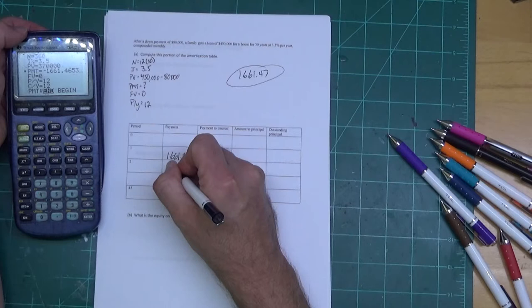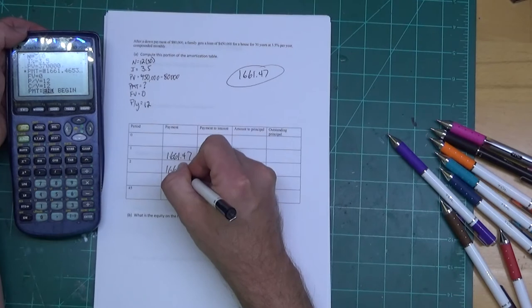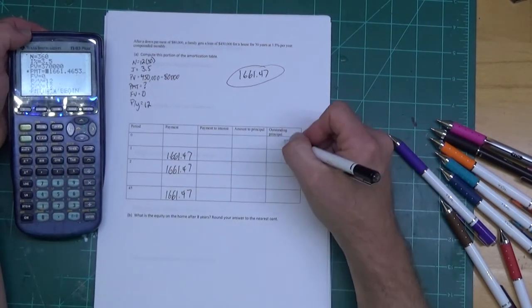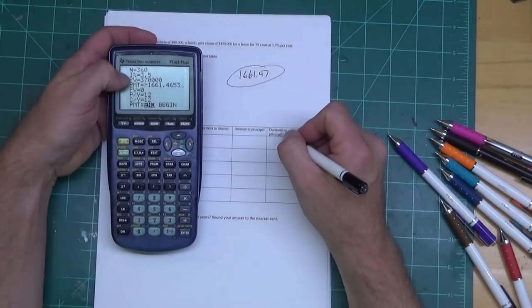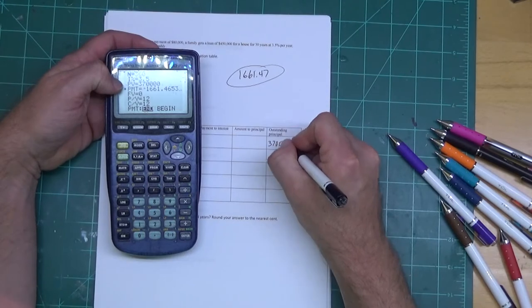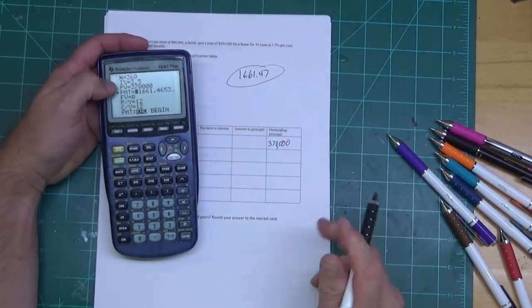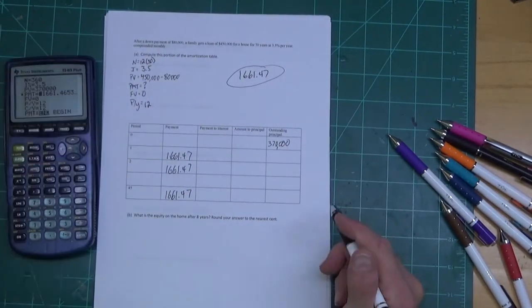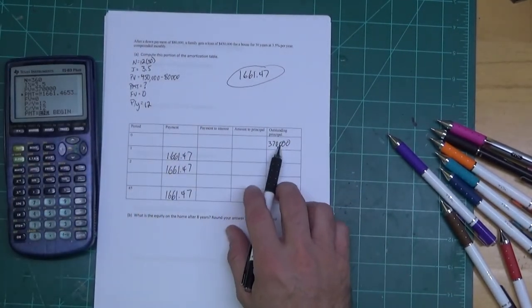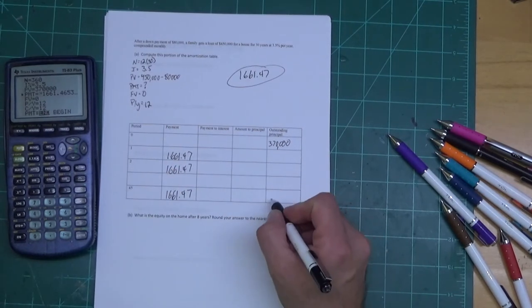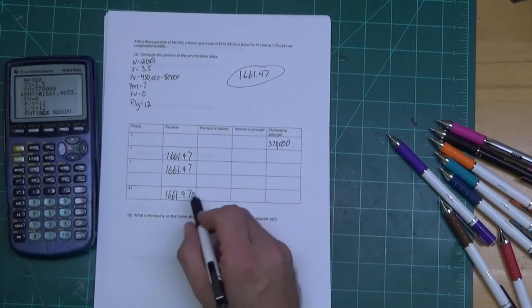So there's my payment, and that's what's going to go all the way down this payment column: 1661.47, 1661.47, 1661.47. Now the outstanding principle - that's going to be the number in PV because that ignores the down payment, you want to repay the down payment. So outstanding principle is the amount you actually borrowed. On the first row we only have that number.